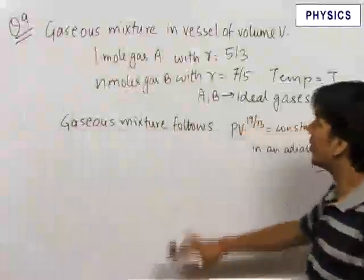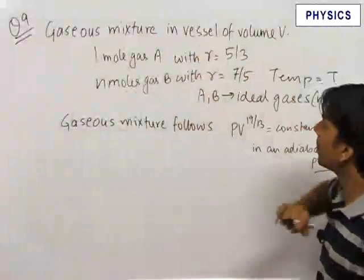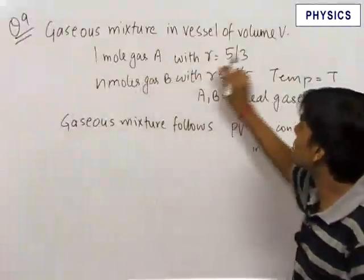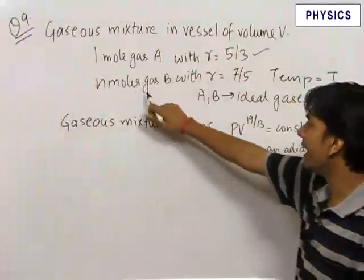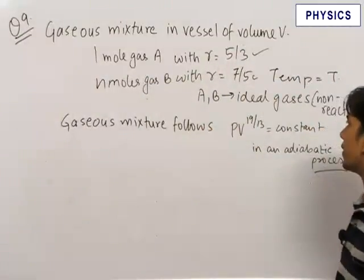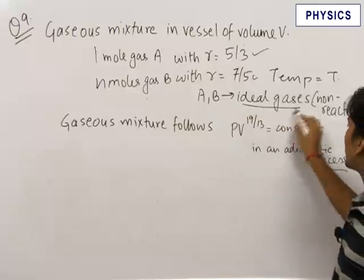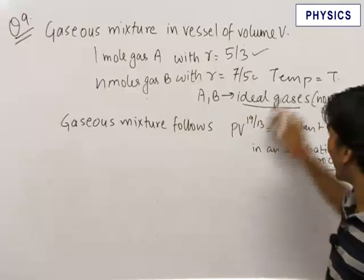Here we have an interesting question. We have a gaseous mixture in a vessel of volume V. It contains one mole of gas A with gamma equal to 5 by 3 and n moles of gas B with gamma equal to 7 by 5. The mixture is of ideal gases which are non-reacting and at a temperature T.